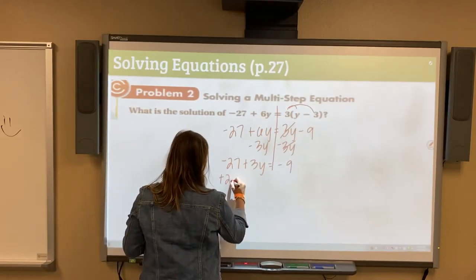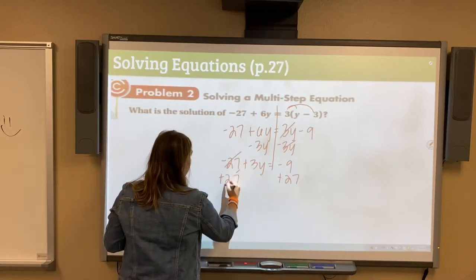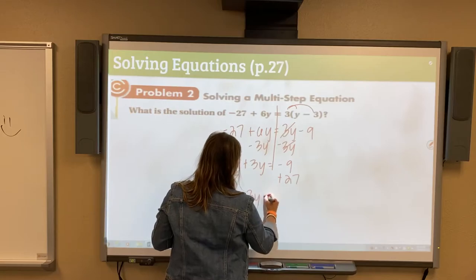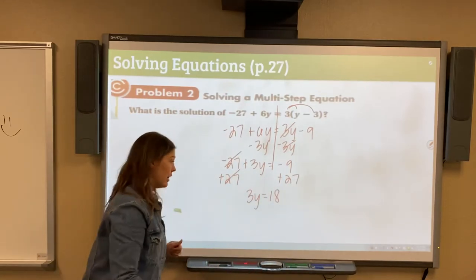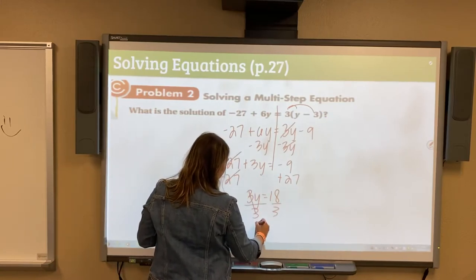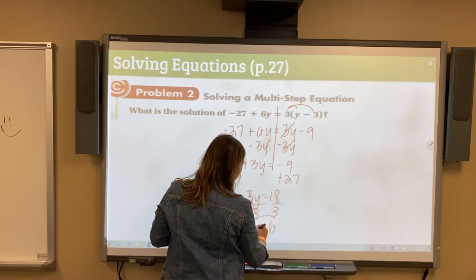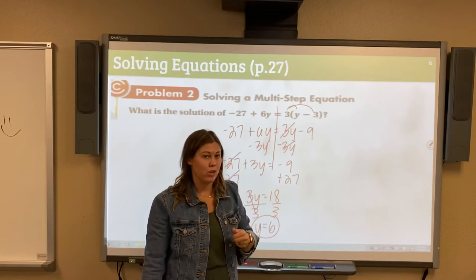Now we can add 27 to both sides. Undo that subtraction. Cancel, cancel. Bring down our 3Y is equal to negative 9 plus 27 is 18. Last, undo this multiplication by dividing by 3. So we get Y is equal to 6. If you wanted to plug that in to check your answer, you totally could.